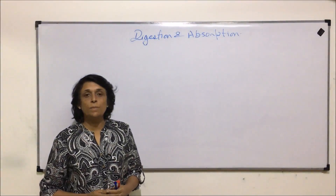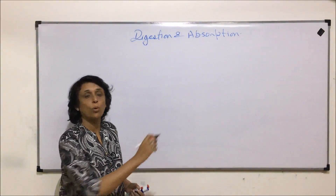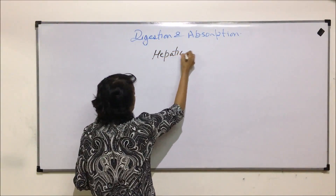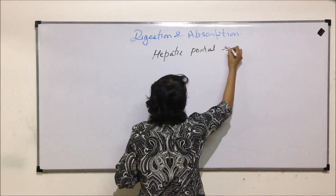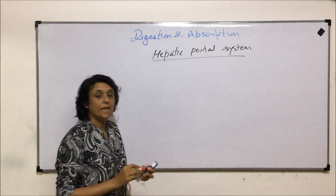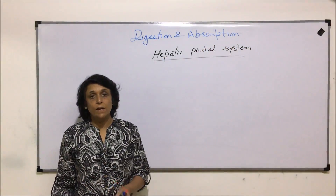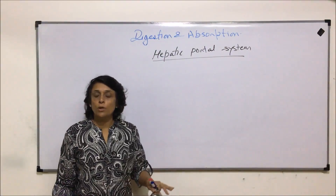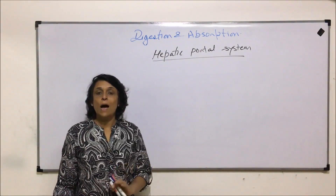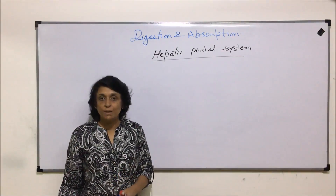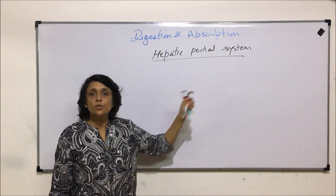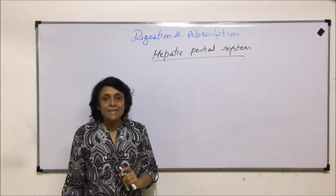In this section we'll be discussing the hepatic portal system. There are three different types of portal systems that exist: hepatic portal, renal portal, and hypophysial portal systems, out of which two are present in higher animals like human beings. One is the hepatic portal system.